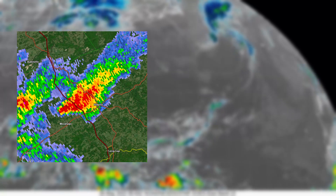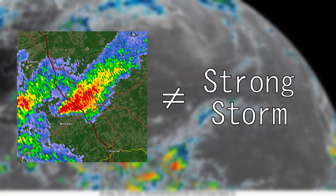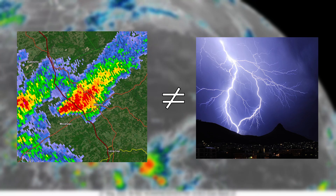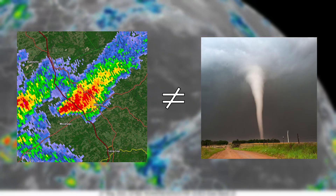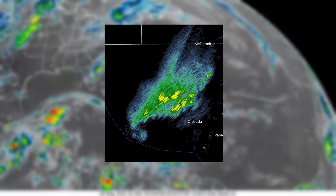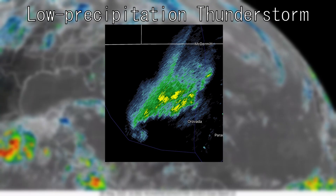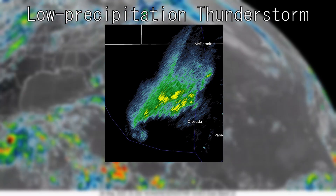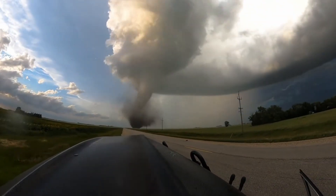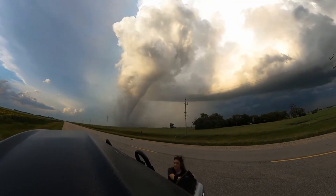Reds on radar don't always indicate a strong storm, as storms with very heavy rain don't always produce lightning, hail, or tornadoes. When thunderstorms have less rain than normal, they are called low precipitation thunderstorms. This type of thunderstorm is great for viewing tornadoes due to very little rain obscuring your view.